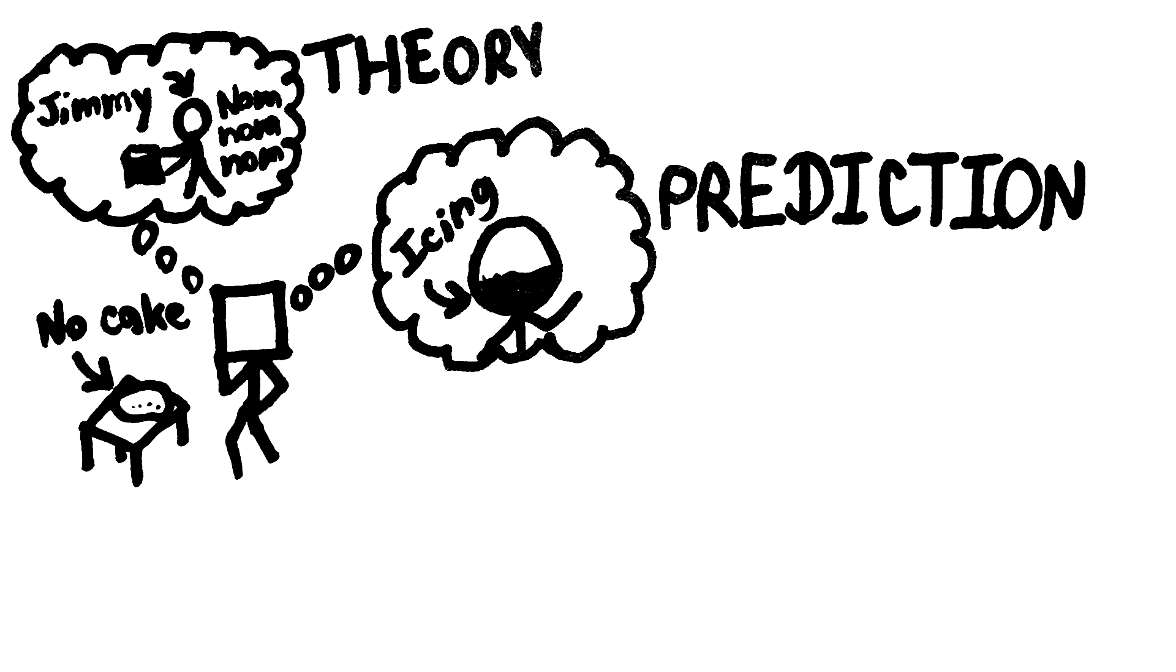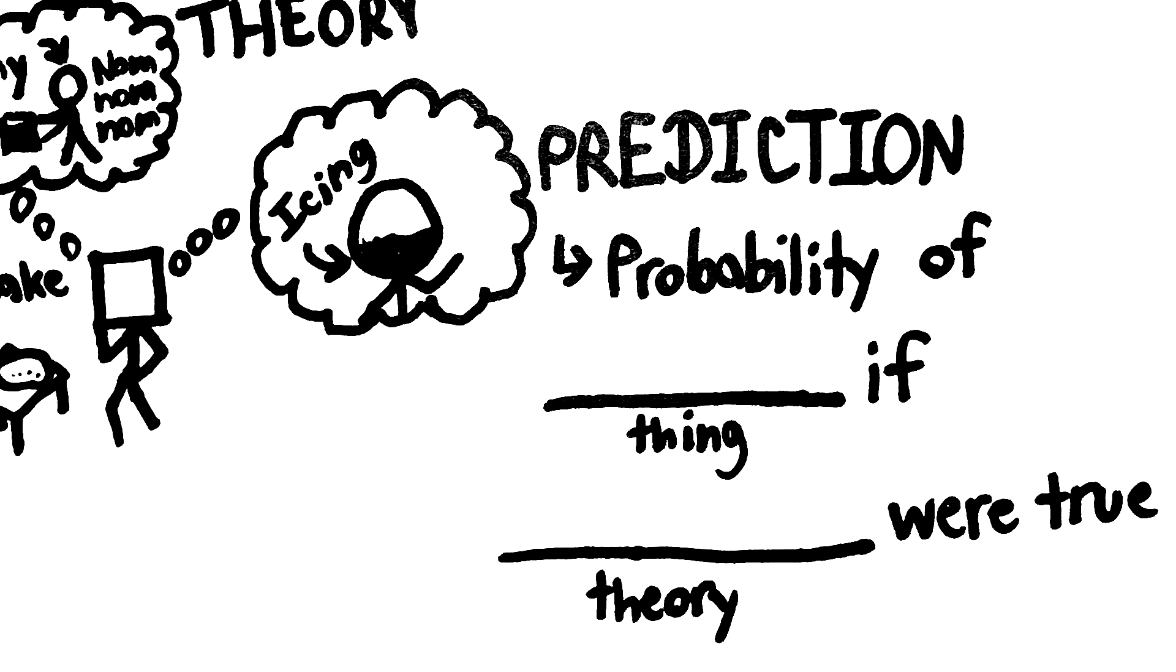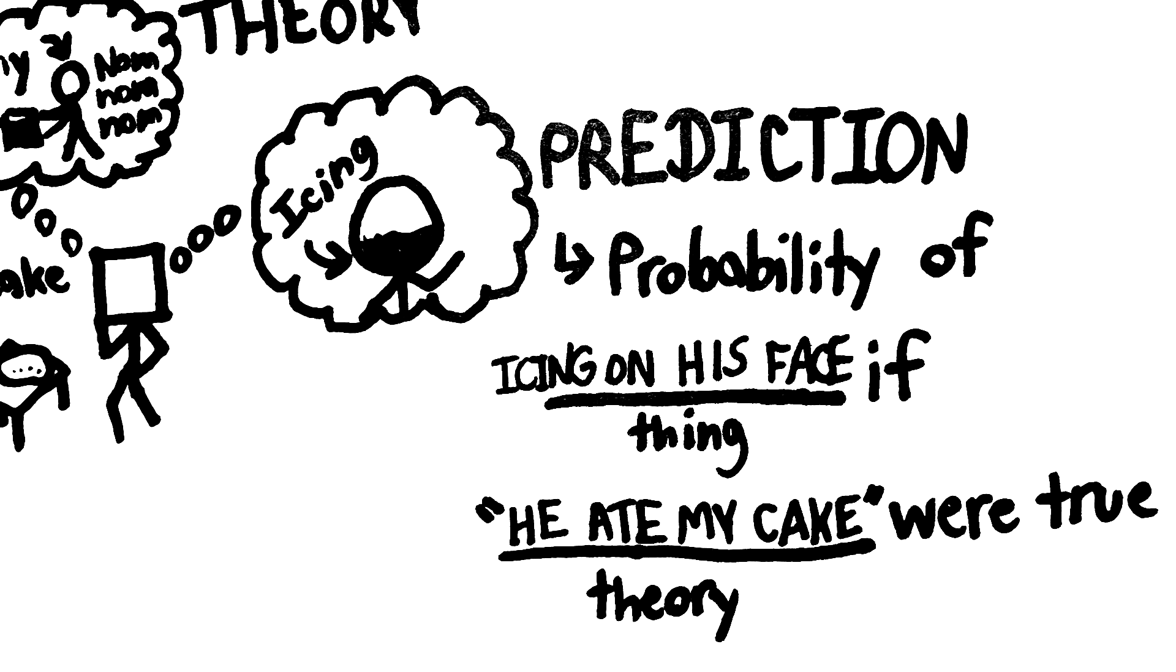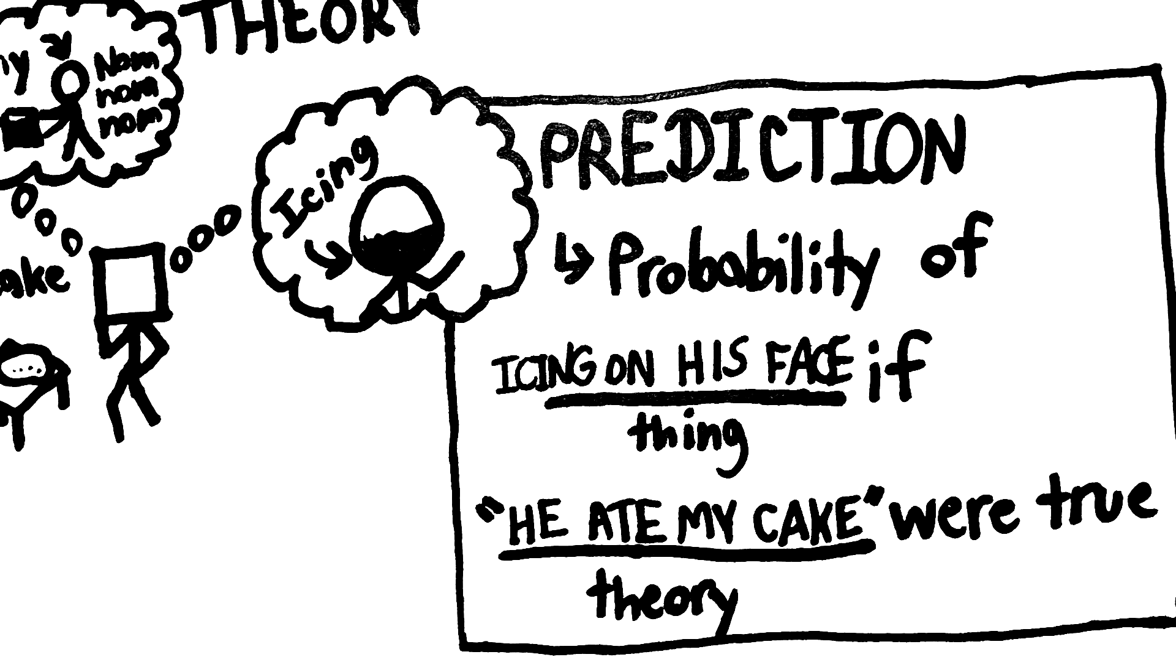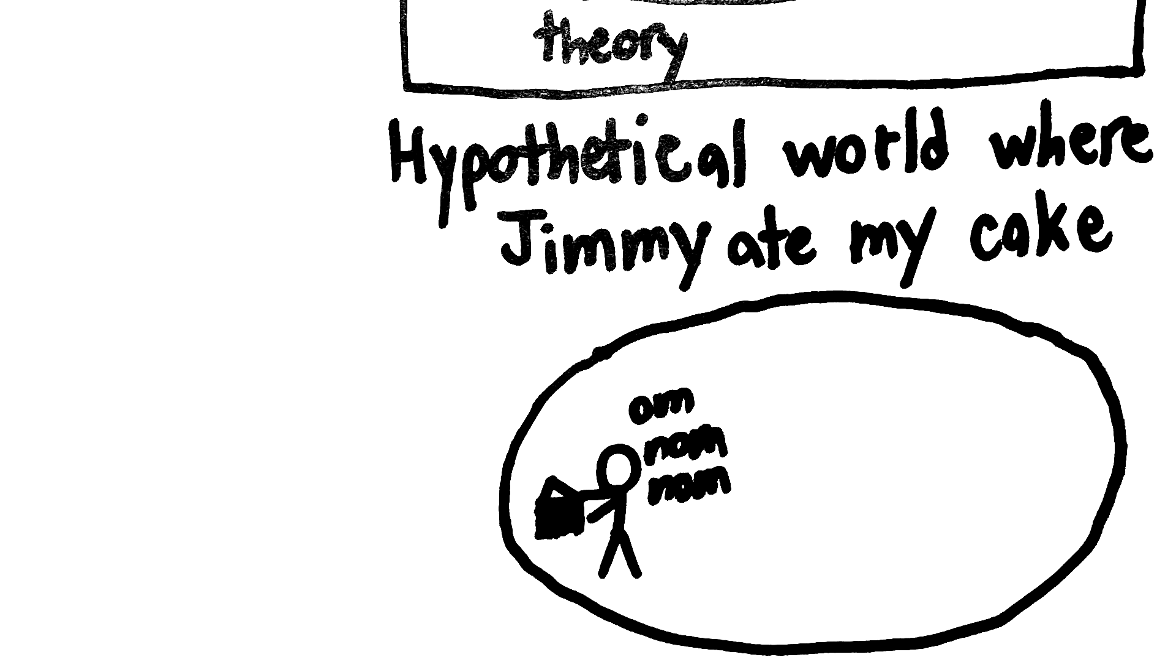Note though that in the context of Bayesianism, prediction has a very specific meaning. Here, it means the probability that Jim would have icing on his face if he did eat my cake. To put it another way, we imagine what the world would look like if my theory was true.